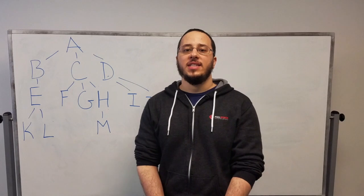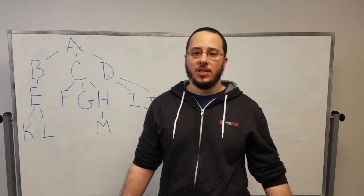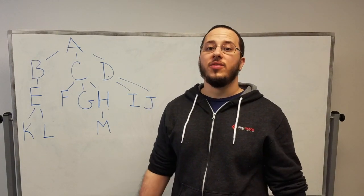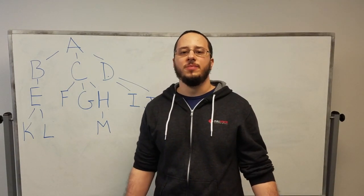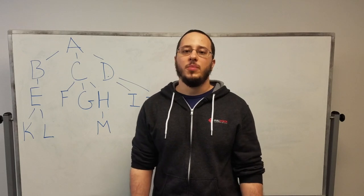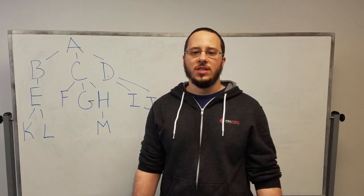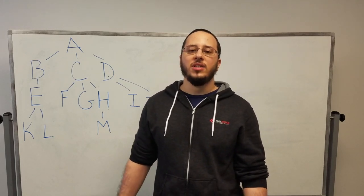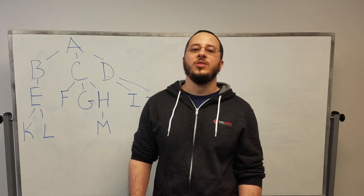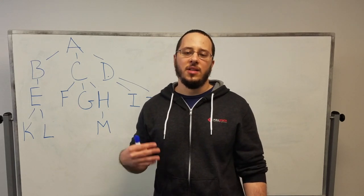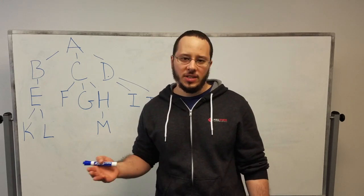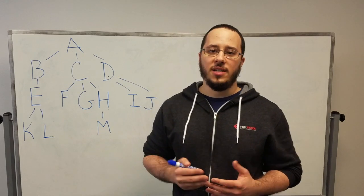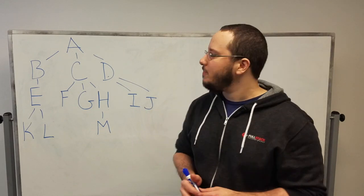Today we're going to write a series of iterator functions for trees — a breadth-first approach and a depth-first approach. Both of these functions are going to take a node and a callback function. It's going to execute that callback function on the node and all of its children, and the only real difference between the two is the order they do these things in.